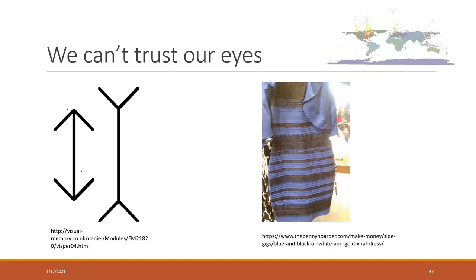We cannot trust our eyes. Here are two very famous examples. The left one—this line looks shorter than this one, but actually they have the same length. On the right side, some people can see blue and black, and some people can see different colors. I can only see black, not blue, but some people see other colors.